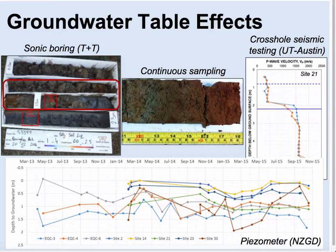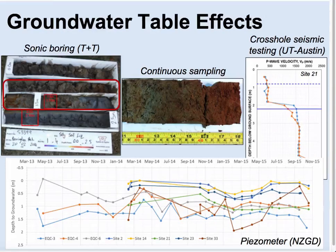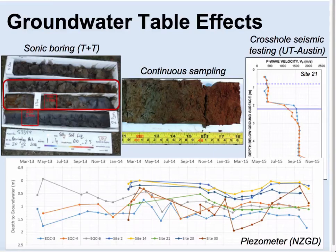We also looked at groundwater table effects, using multiple techniques to obtain a robust understanding of groundwater conditions at each case history site. Using sonic borings and continuous sampling, we looked at iron-staining in cores where depth to iron-staining ceased was estimated as the deepest the groundwater table had fluctuated. We also looked at P-wave velocities from the UT Austin cross-hole seismic testing to estimate depth to 100% saturation, as well as piezometer data from the New Zealand Geotechnical Database.